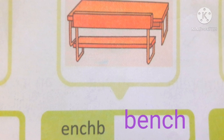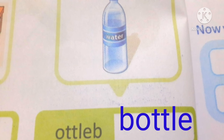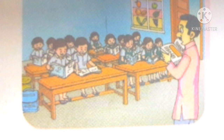B, E, N, C, H — bench. B, O, T, T, L, E — bottle. Thank you very much. Bye-bye, see you next class. Practice at home. See you next class. Bye-bye.